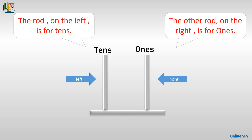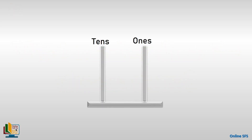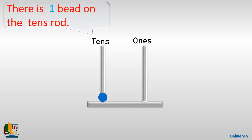Now let's see what number does the abacus show. We will teach you how to read numbers on an abacus. Remember, the tens column is on the left. Let's see how many beads are on the tens rod.